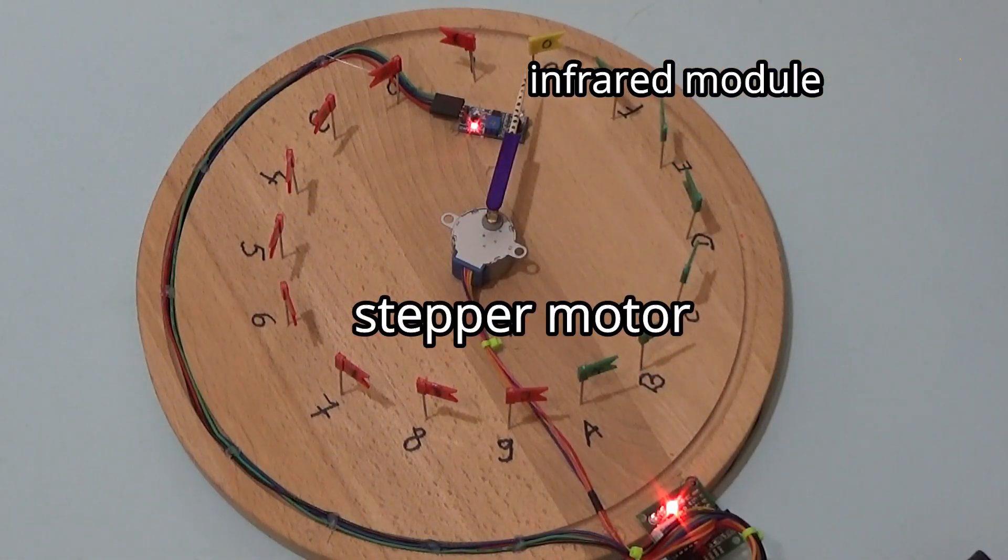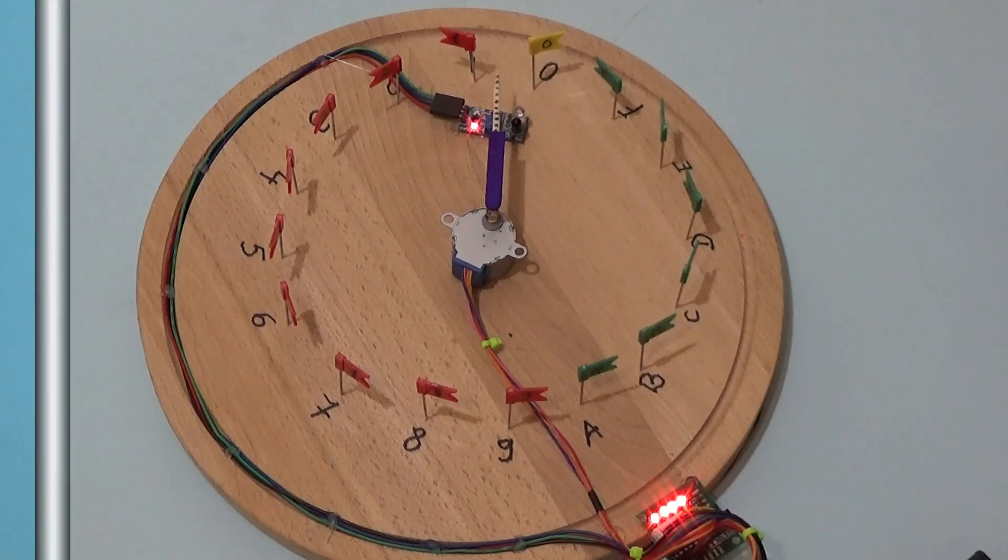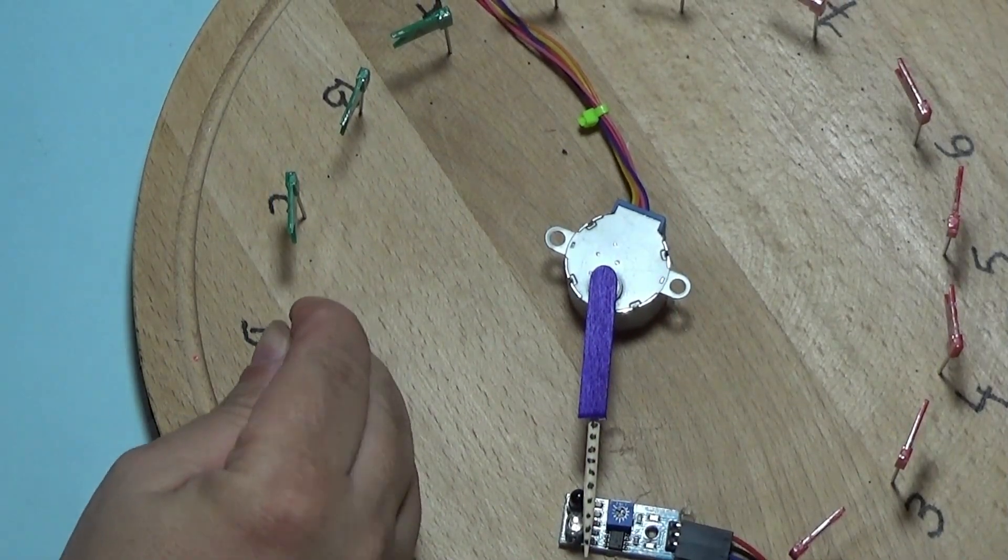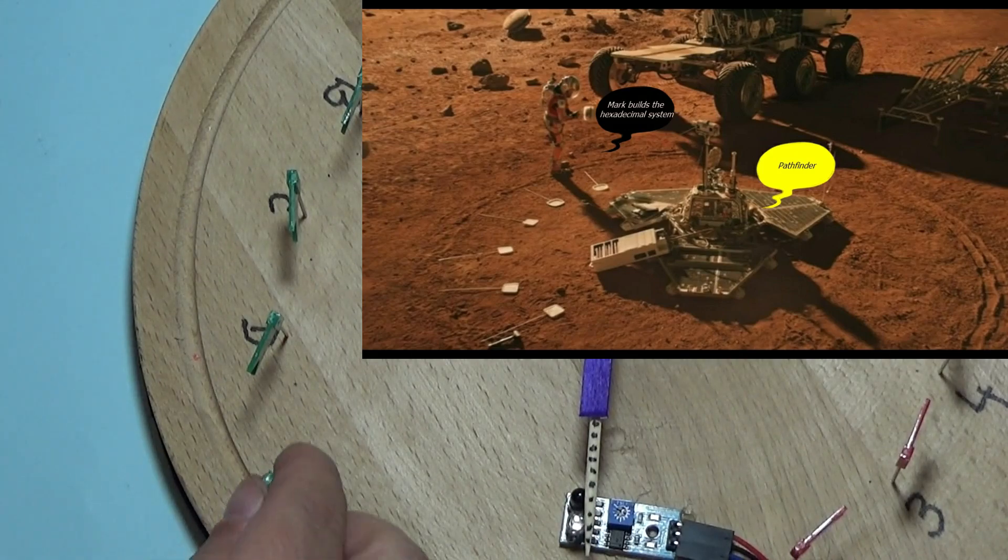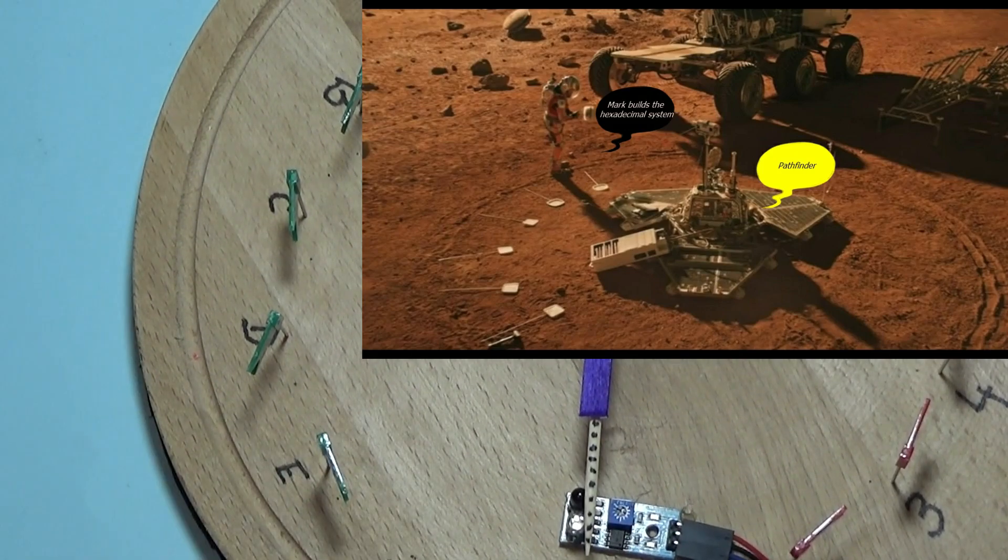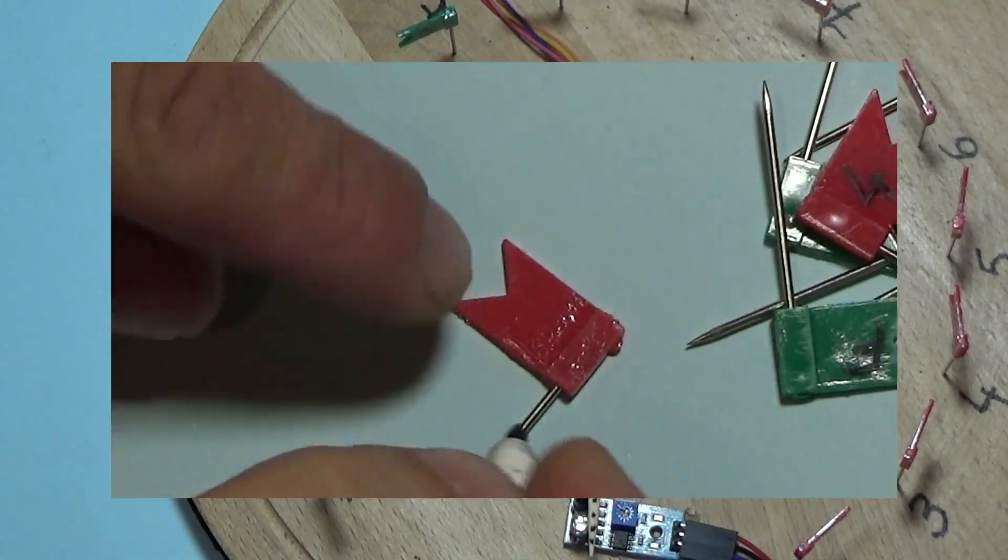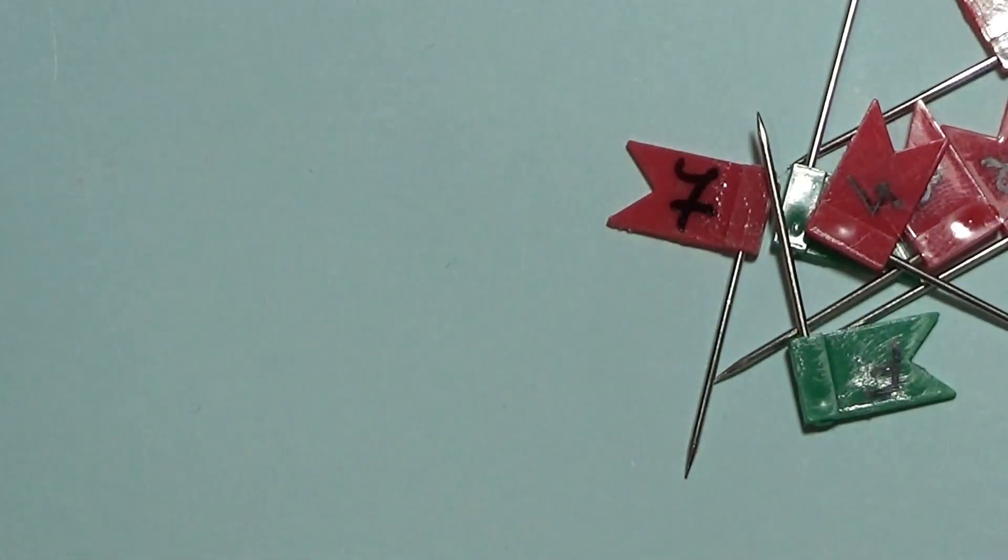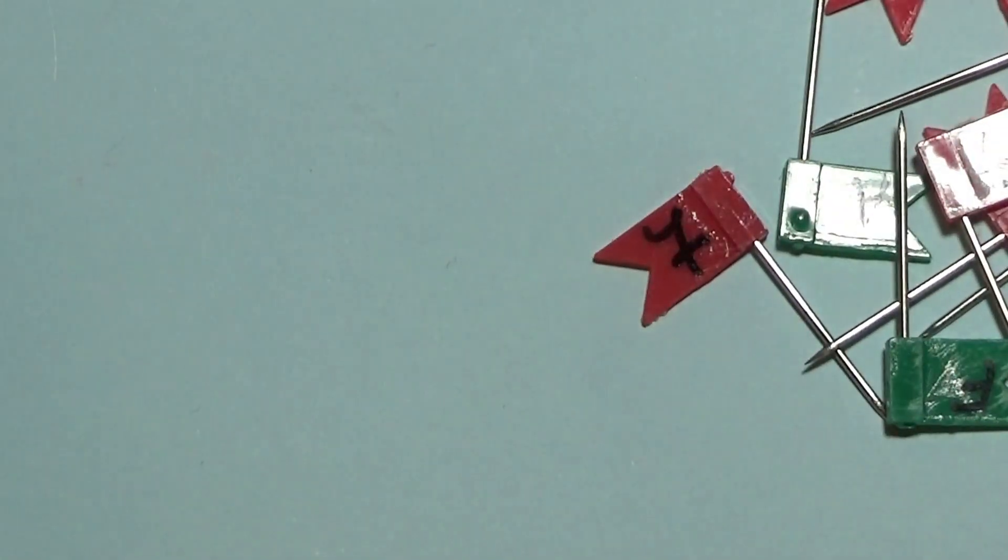An infrared module for bringing the engine to point zero. For the construction I chose a round wooden support and a few pioneers with flags. You can choose any other support, even paper and characters written with a pen.